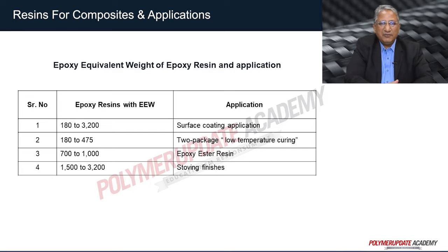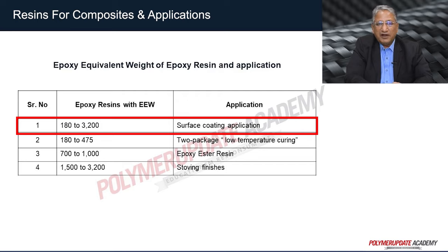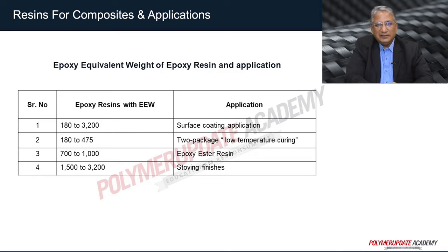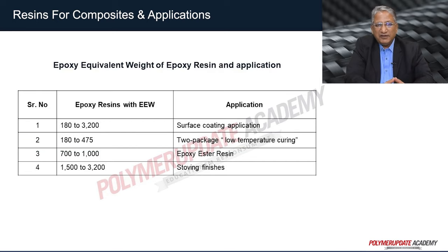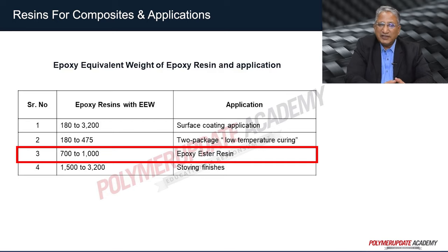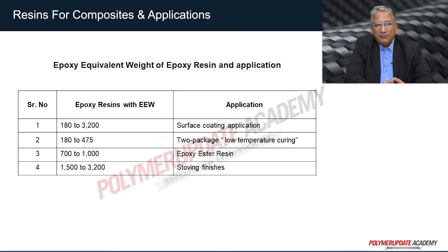Different epoxy resins with different epoxy equivalent weight (EEW) have different applications. Epoxy resins with EEW between 180 to 3200 are used in surface coating applications, while EEW of 180 to 475 is used in 2-pack low temperature curing systems. EEW of 700 to 1000 are used for manufacturing epoxy ester resins, while EEW from 1500 to 3000 are used for stoving finishes. Epoxy resin is also used to make epoxy prepack systems, which are solvent-free systems providing long shelf life at room temperature, suitable for a wide variety of reinforcements and components of different dimensions.